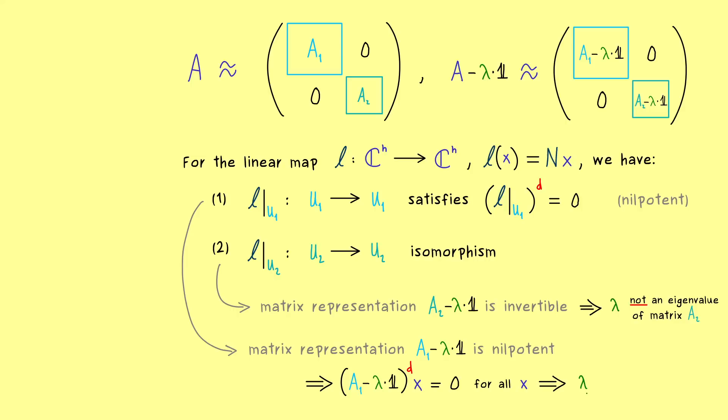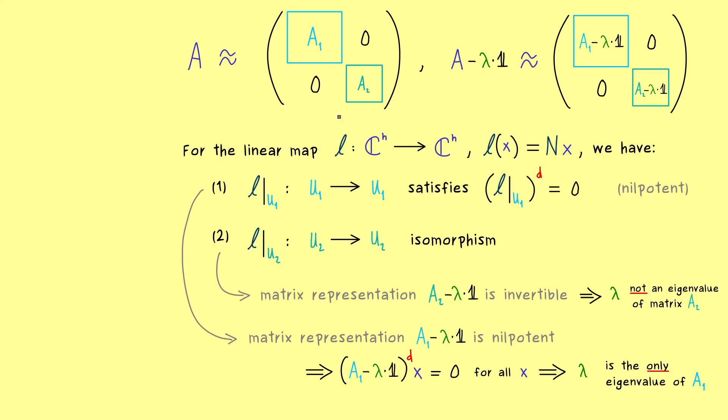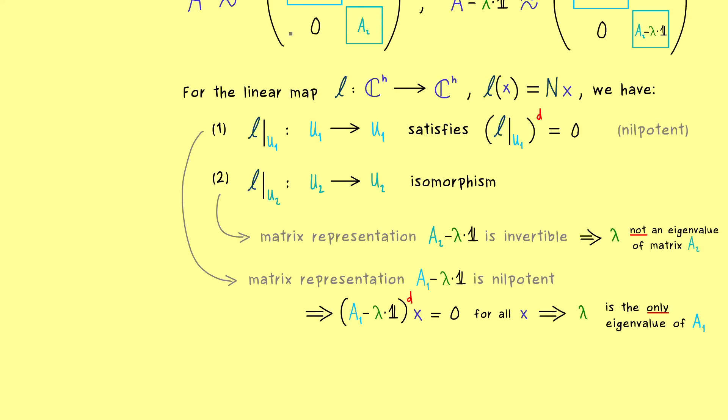So lambda is the only possible eigenvalue of A1. And with that we have all the information we wanted for the eigenvalue lambda in our block form of A. And this is the important result of the video, the characteristic polynomial of A splits up into two parts.